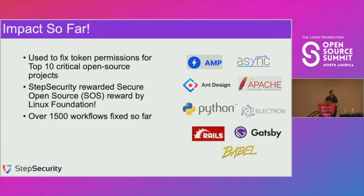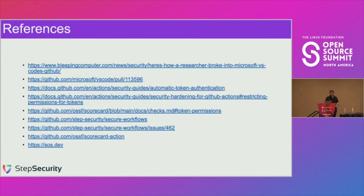This is the impact of the Secure Workflows project so far. We used it to fix token permissions for the top 10 critical open source projects, and for that, StepSecurity was awarded the Secure Open Source Reward by the Linux Foundation. This was discussed earlier in the conference — these are rewards given for securing open source projects. Over 1,500 workflows have been fixed so far. These are some references about the things I discussed — thank you, and let me know if you have any questions.